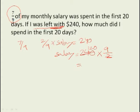So the total salary must be 240 times 9 over 2. That'll give you 1080. How much did he spend in the first 20 days? The difference. So you take away 240 from here and you're left with 840. That's your answer.